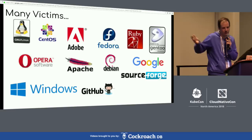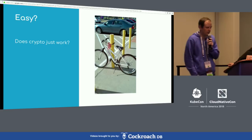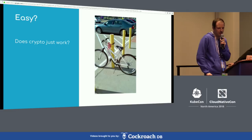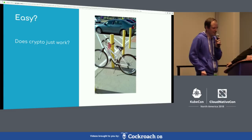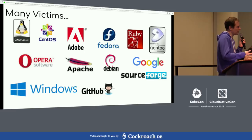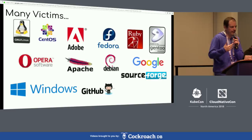Some people think it's easy — just sign things and everything works, like putting a lock on your bike. But that isn't how things work. For these companies, it isn't that they didn't have crypto. They weren't doing the right things with their crypto — not protecting against the right types of attacks, not signing the right things, not protecting keys appropriately, and not making it so they could recover if something went wrong.